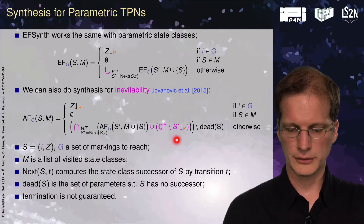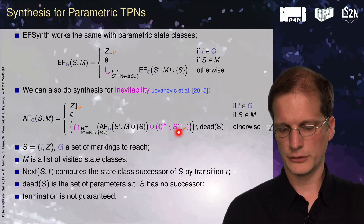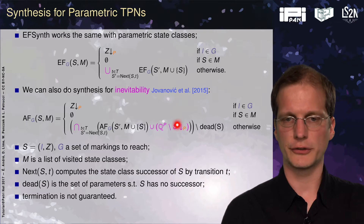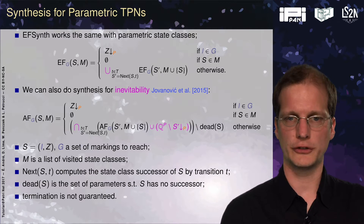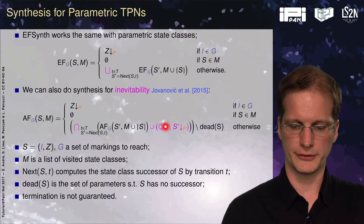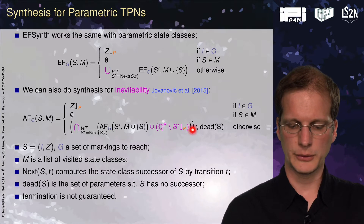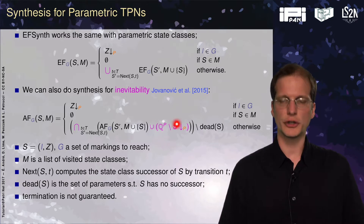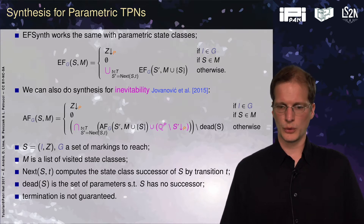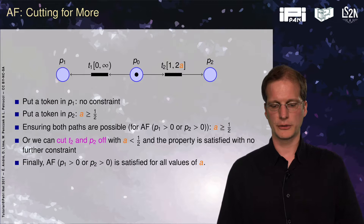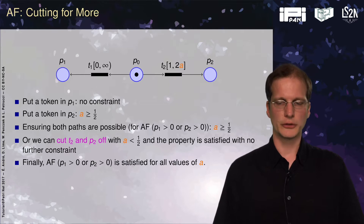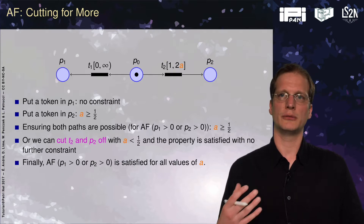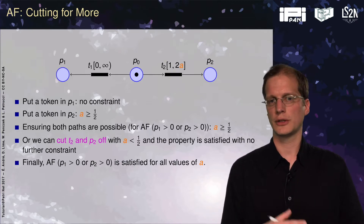We also have a part corresponding to the complement of the reachability condition of the successor — the values of the parameter that allow us to take the transition, complemented. This gives us a way to cut off successors. By doing this we can sometimes get bigger results than by just making every branch go to the goal. If a branch does not reach the goal marking, we can just cut it off.